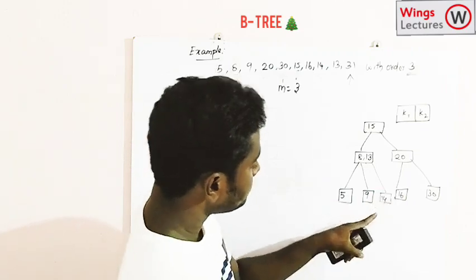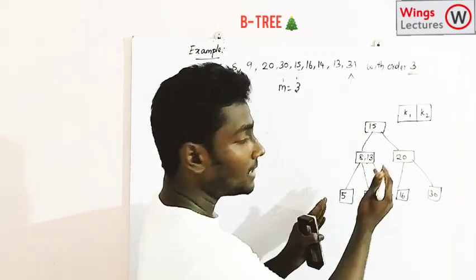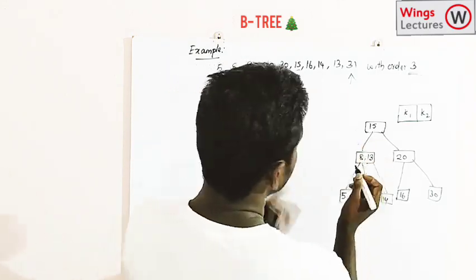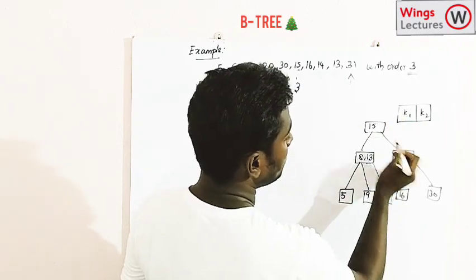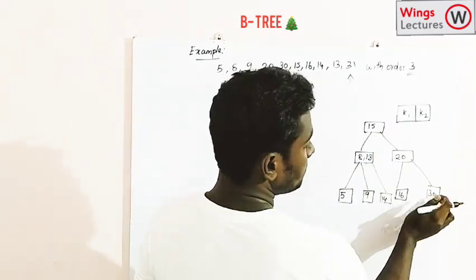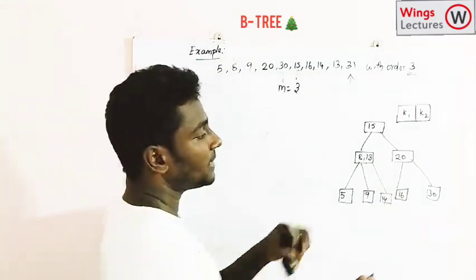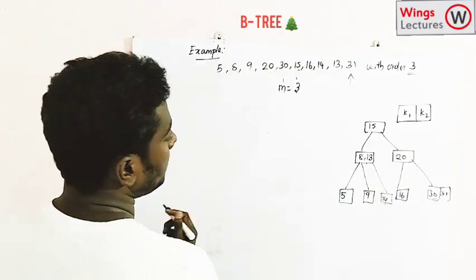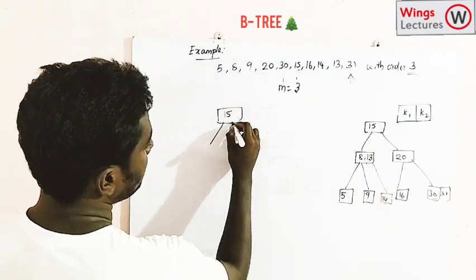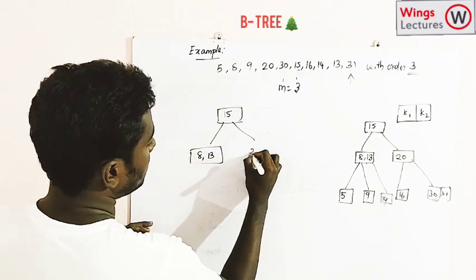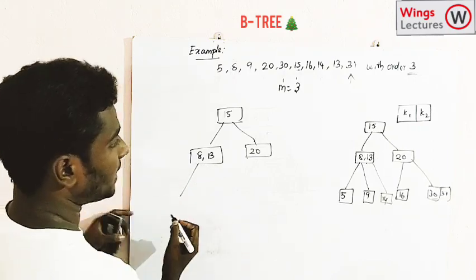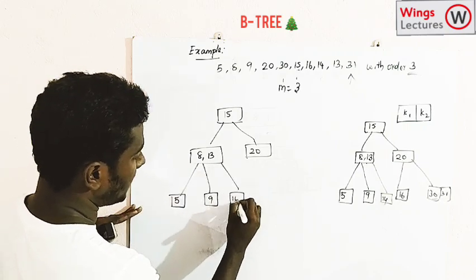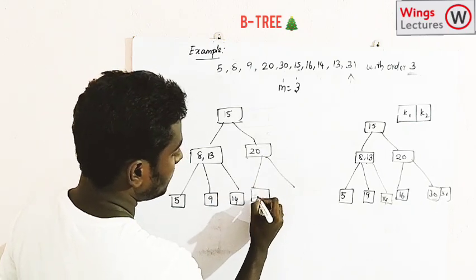After placing 13 at the previous level, 9 and 14 become isolated sibling nodes. The final element to insert is 31. Since 31 is greater than 15, greater than 20, and greater than 30, it goes to the rightmost node alongside 30. That node has only one element, so there is space — we place 31 there. The final tree has root 15, with left subtree rooted at 8 and 13, and right subtree rooted at 20.